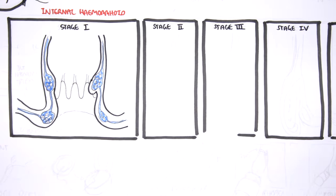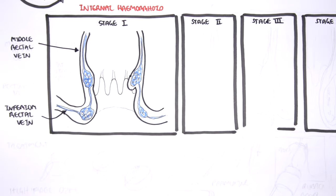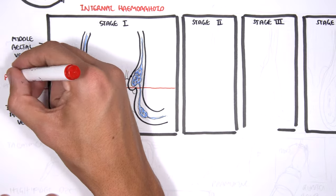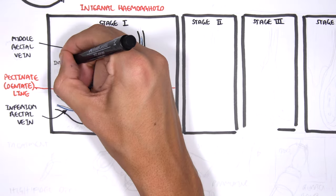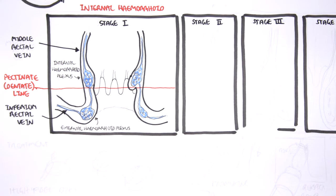Looking more closely at the anatomy, the middle rectal vein and the inferior rectal vein drain the anal area. The middle rectal veins drain into the inferior mesenteric vein, and the inferior rectal drains eventually into the inferior vena cava through the pudendal vein. We have to remember the pectinate line or the dentate line. The internal hemorrhoid plexi above the pectinate line and the external hemorrhoid plexi lies below the pectinate line.